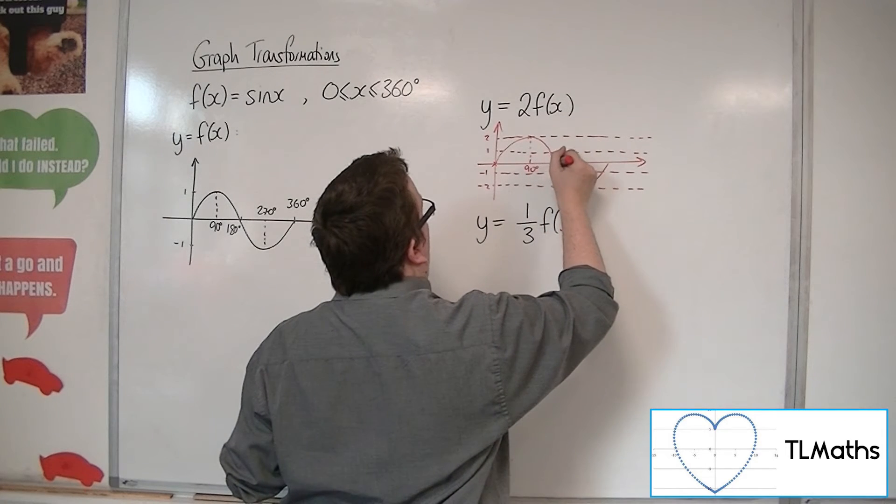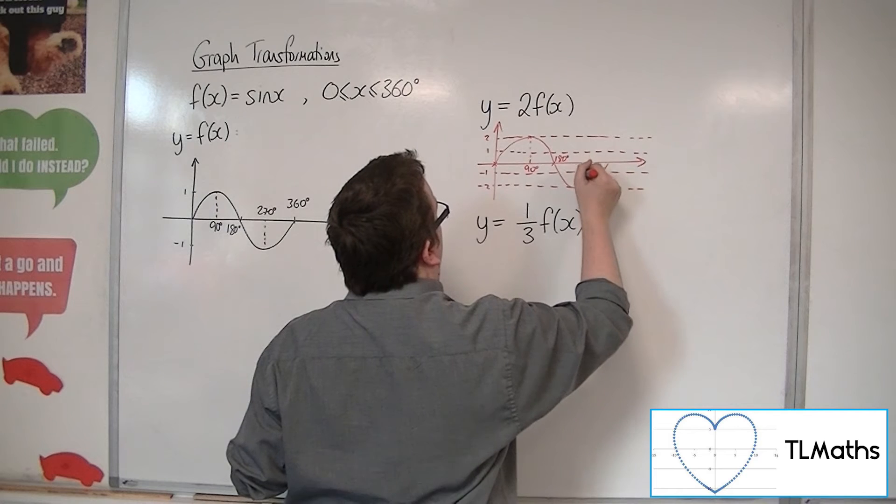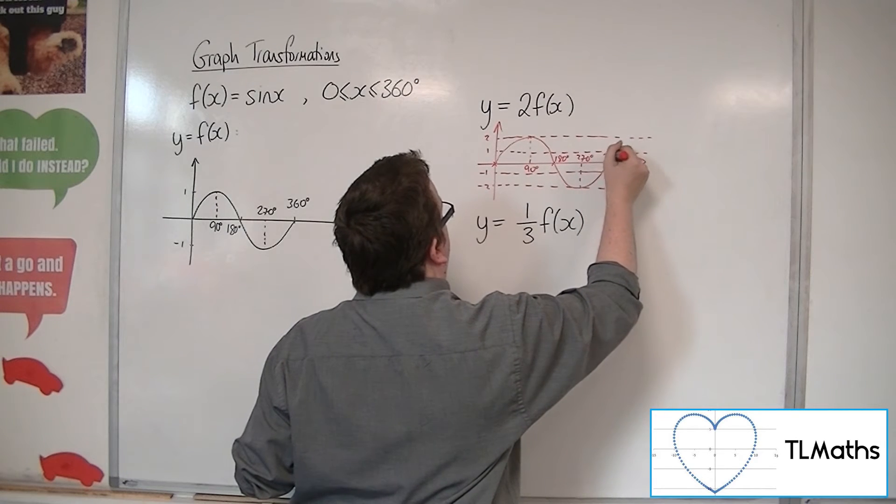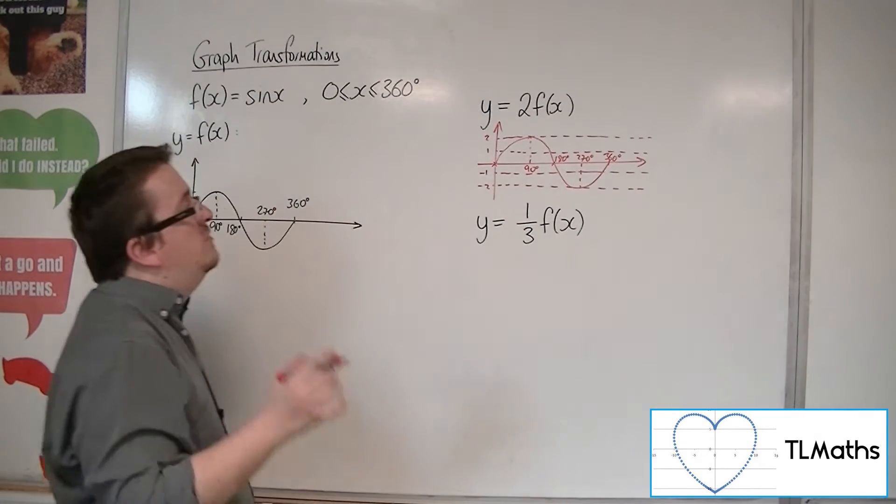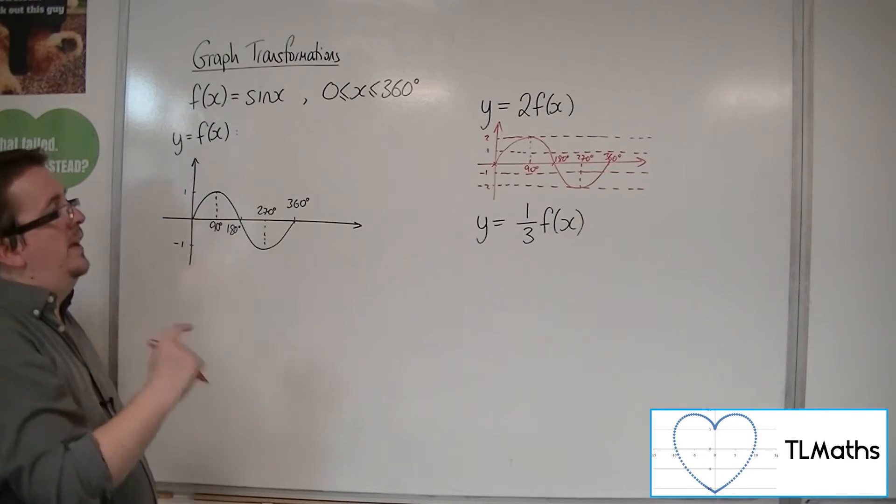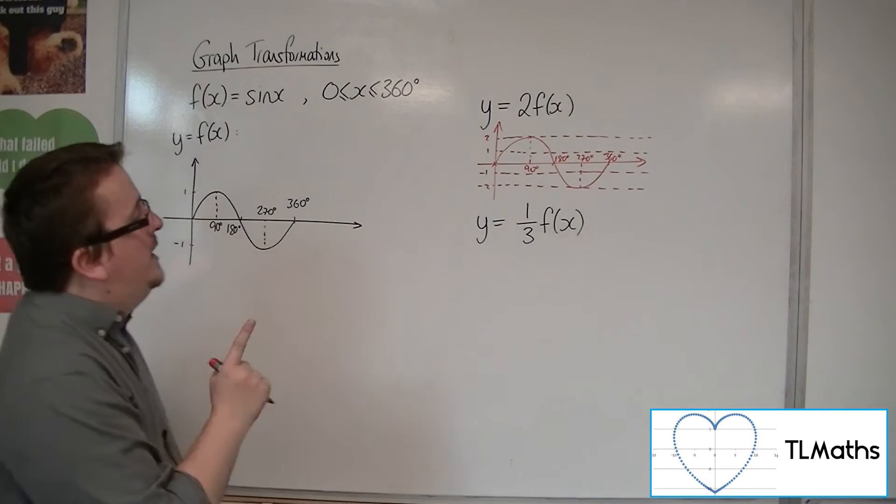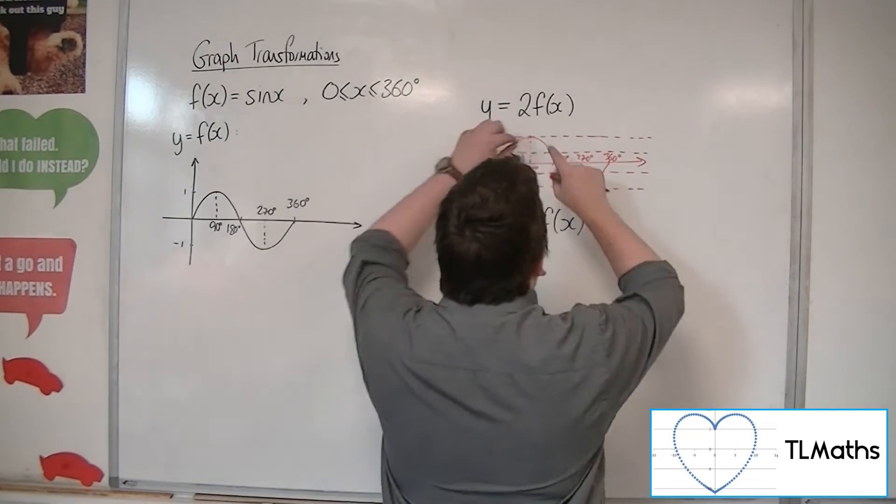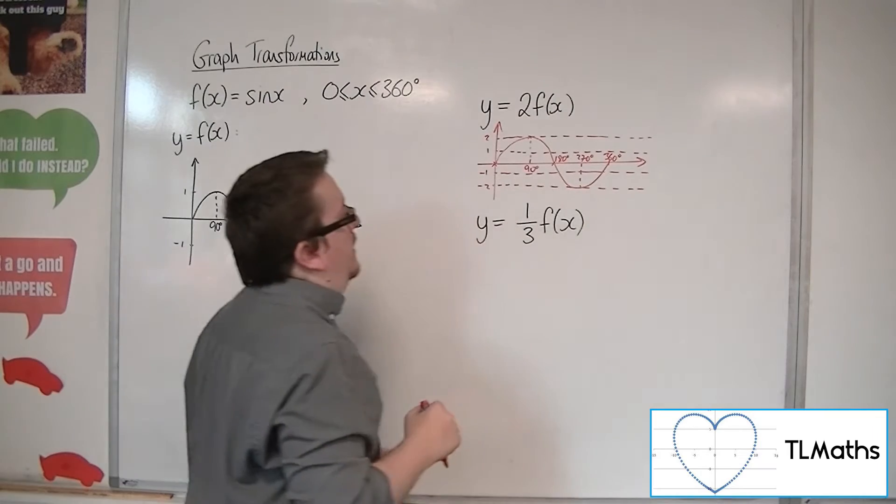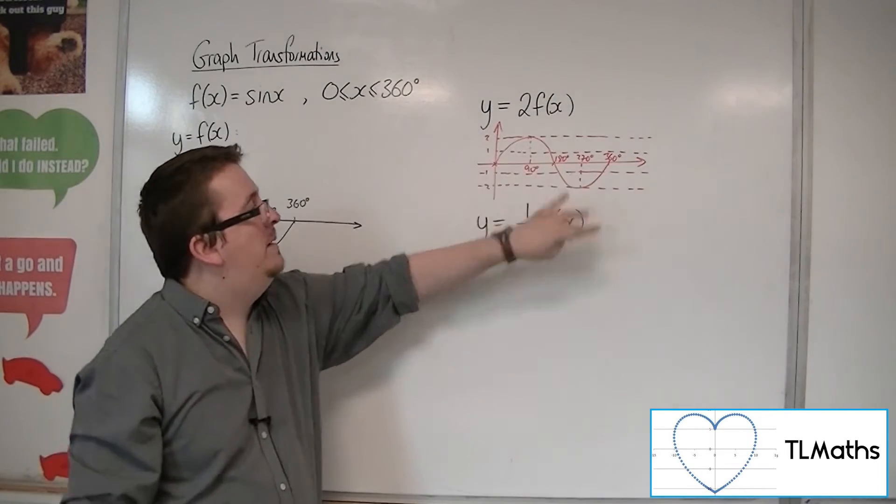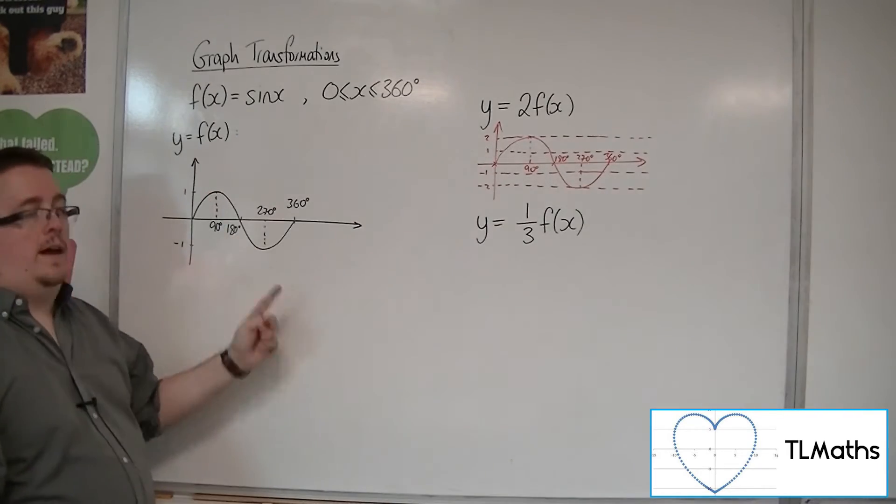So that's 90, that's 180, that's 270, that's 360. It still goes through the same x coordinates, but the y coordinates have all doubled, because it's going through 2 and minus 2 rather than 1 and minus 1.